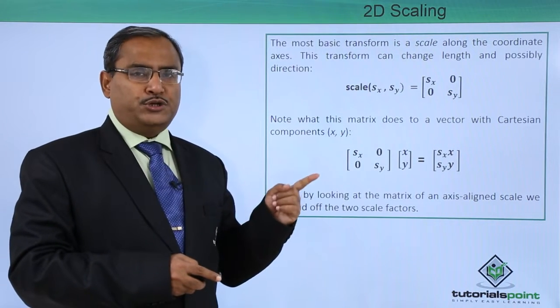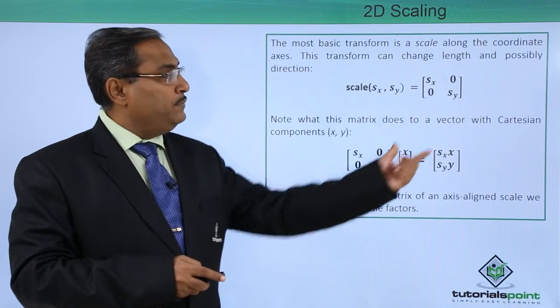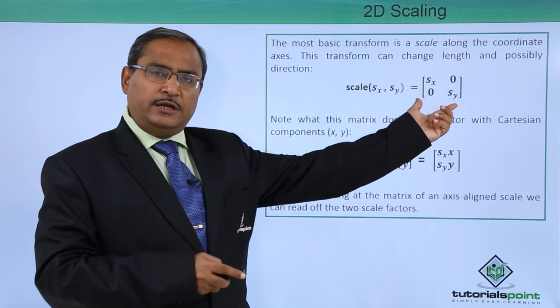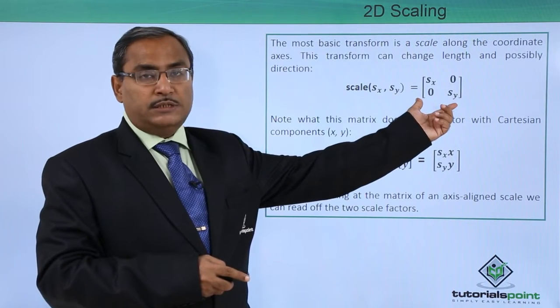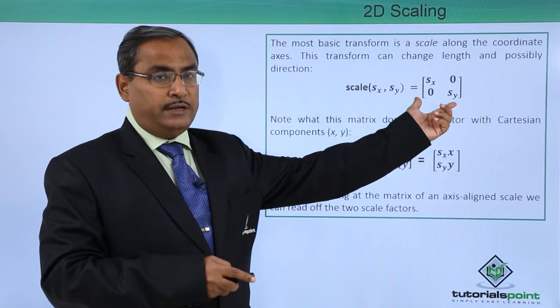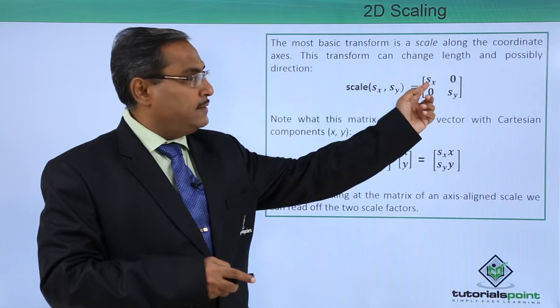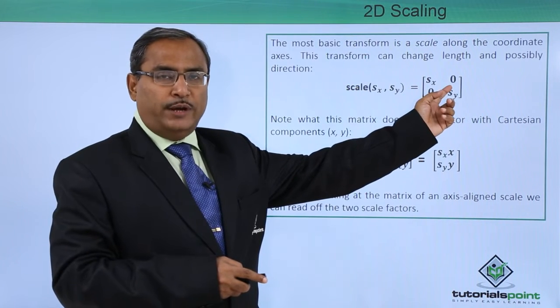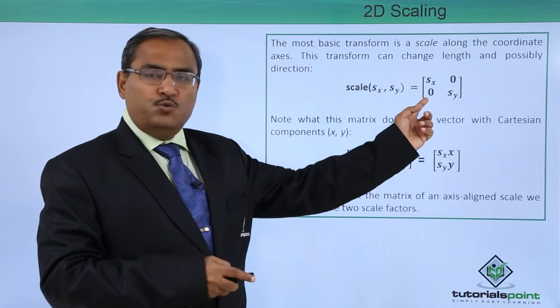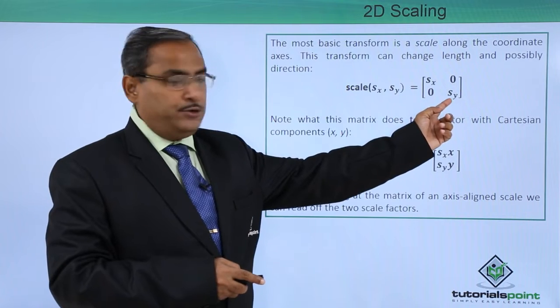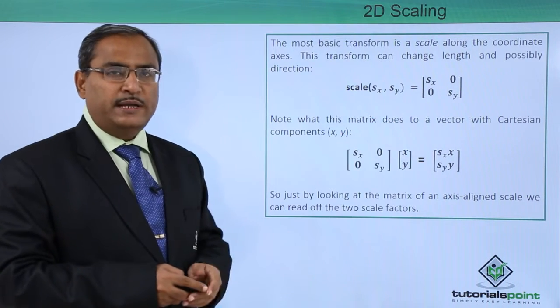In our 2D transformation video, we wrote the generic form of this matrix. Here we wrote A11, so now it has been replaced by Sx. A12 is now 0, A21 is now 0, and A22 is now being replaced by Sy.